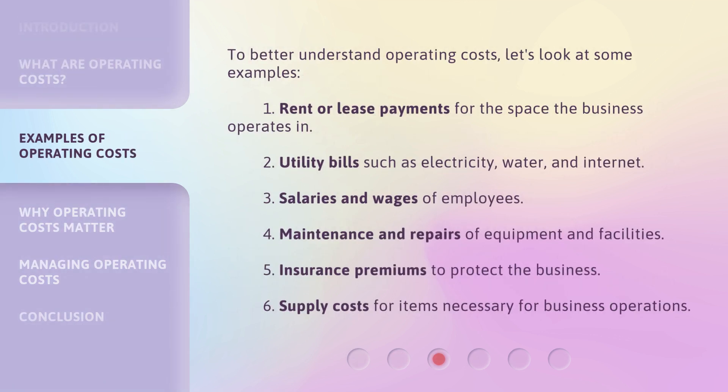To better understand operating costs, let's look at some examples. 1. Rent or lease payments for the space the business operates in. 2. Utility bills such as electricity, water, and internet. 3. Salaries and wages of employees. 4. Maintenance and repairs of equipment and facilities. 5. Insurance premiums to protect the business. 6. Supply costs for items necessary for business operations.